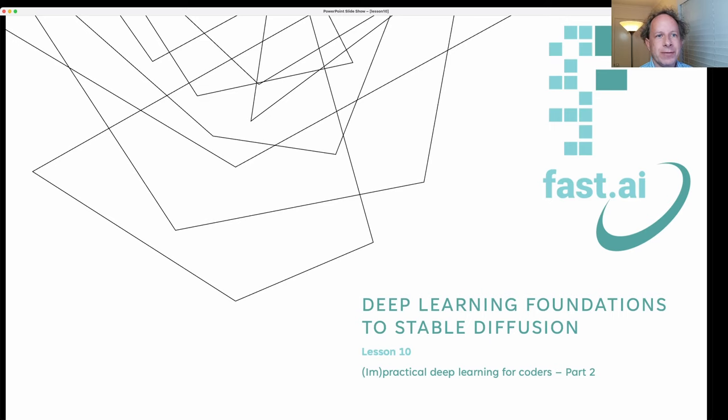Hi everybody and welcome back. This is lesson 10 of practical deep learning for coders — the second lesson in part two, where we're going from deep learning foundations to stable diffusion. Before we dive back into our notebook, let's take a look at some of the interesting work that students in the course have done over the last week. I'm going to show a small sample of what's on the forum, so check out the share your work thread for many more examples.